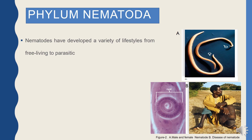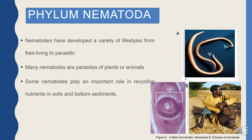Nematodes have developed a variety of lifestyles from free-living to parasitic. Free-living means they don't depend on others — nematodes in soil are free-living. Those found in plants and animals are our parasites. Some nematodes help in soil recycling and making soil fertile. Some are also used in biocontrol — to control one organism with another organism.